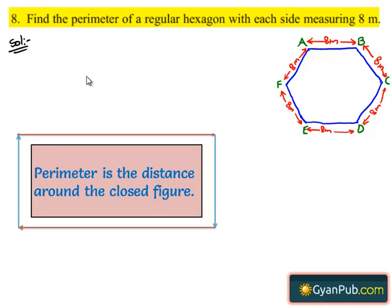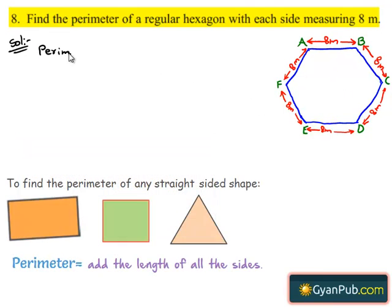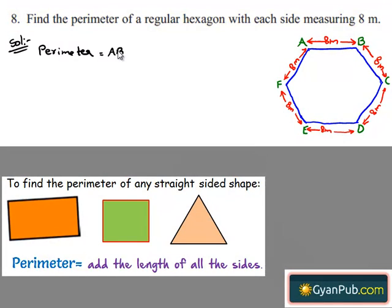Here the perimeter of the figure is nothing but sum of the sides. That is, perimeter is equal to sum of the sides: AB plus BC plus CD plus DE plus EF plus FA.